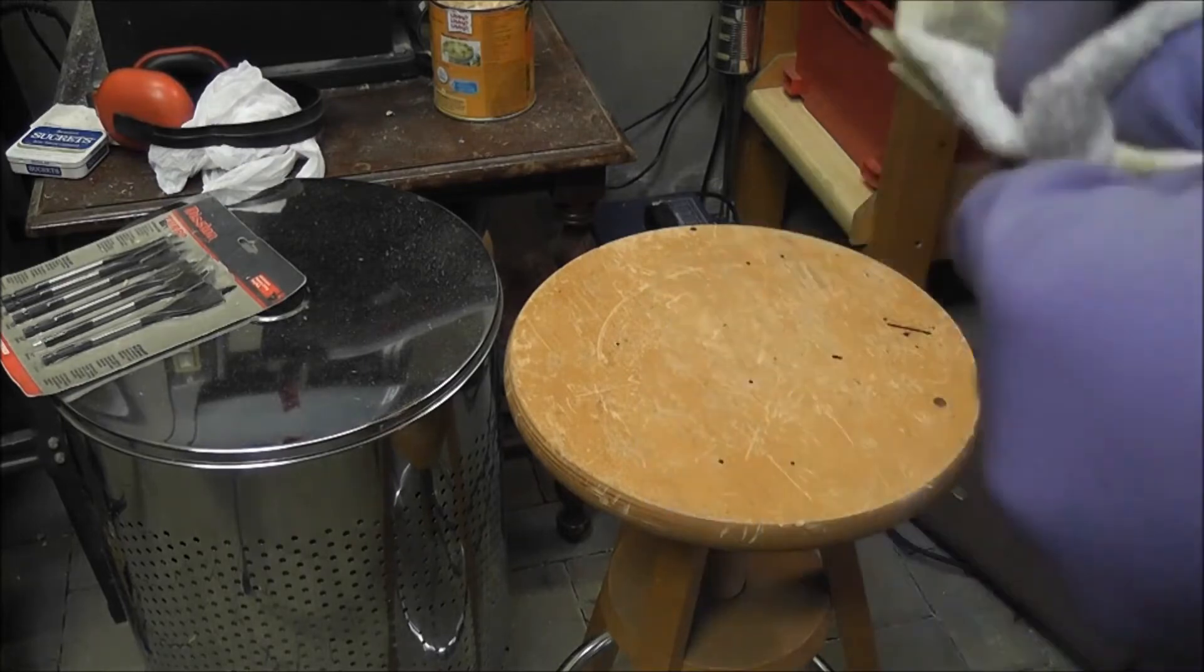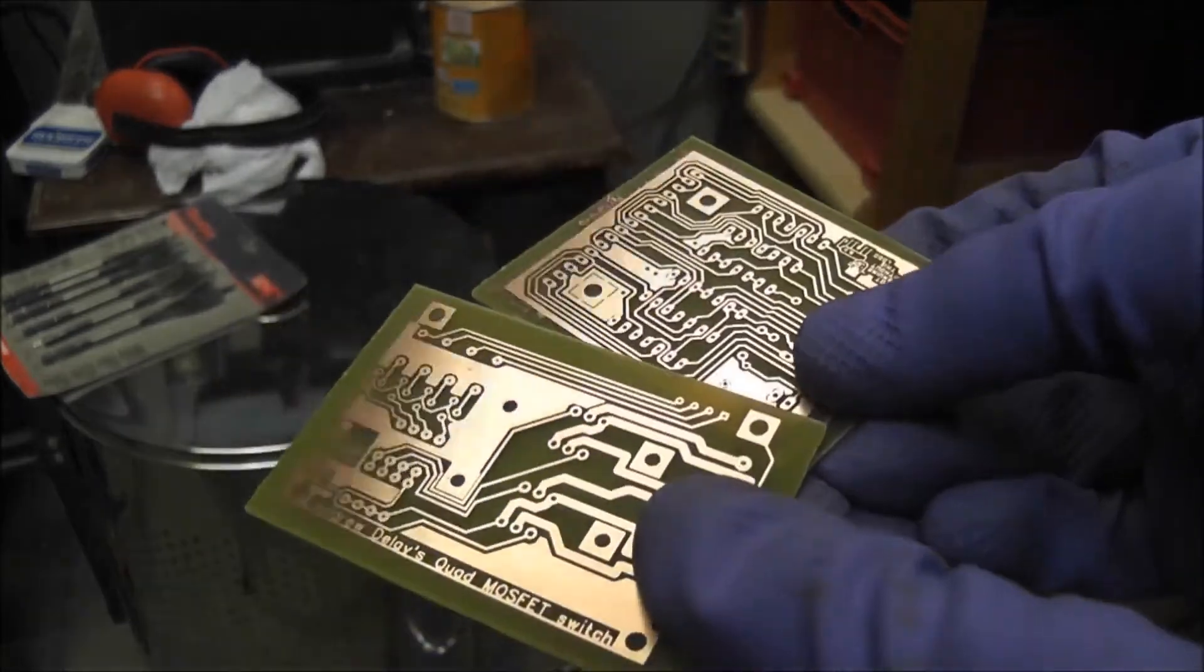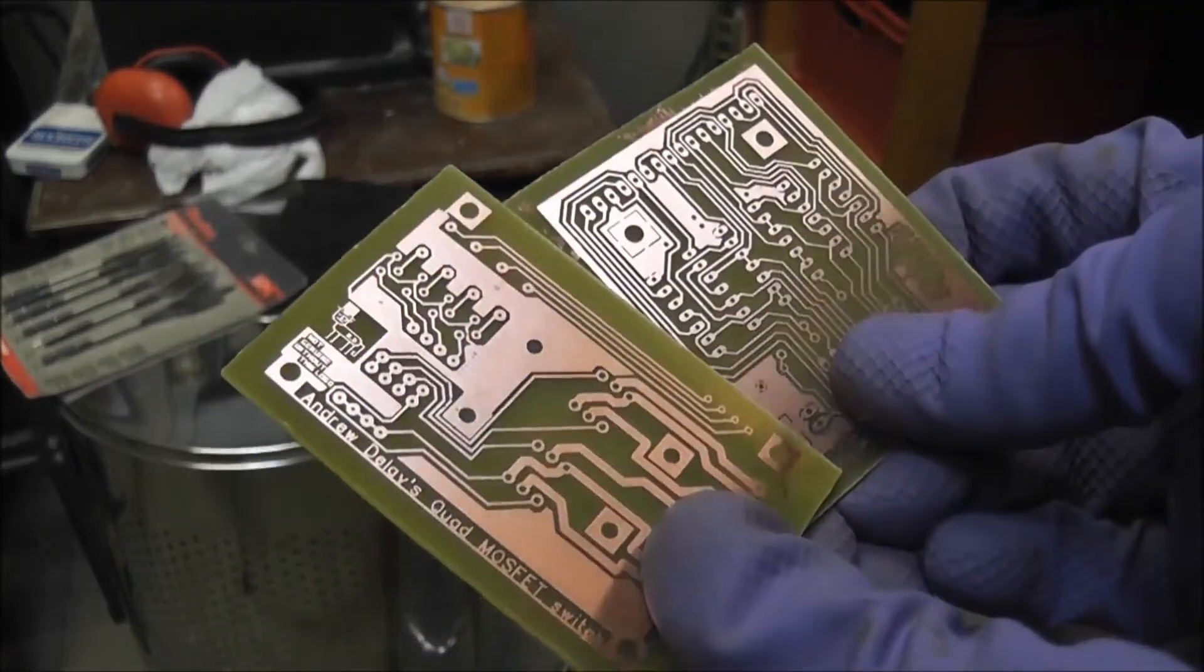Now we must get rid of the residue coating on the traces by cleaning the board with acetone or nail polish remover. Make sure the copper traces are nice and shiny.